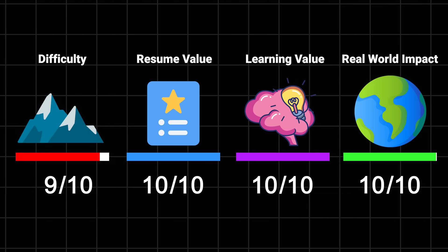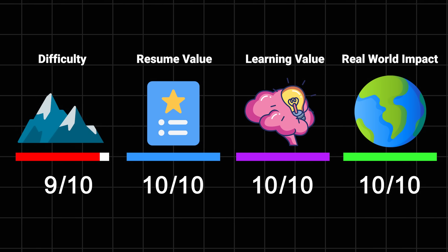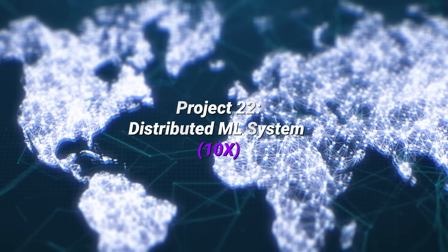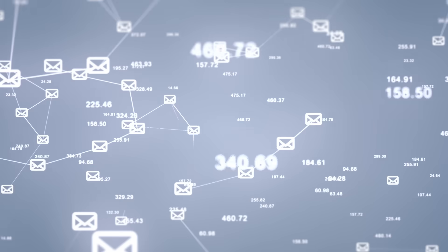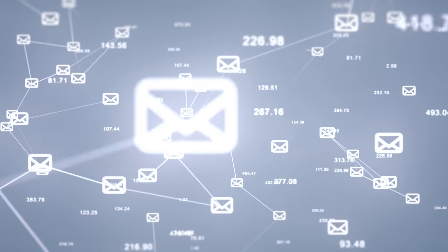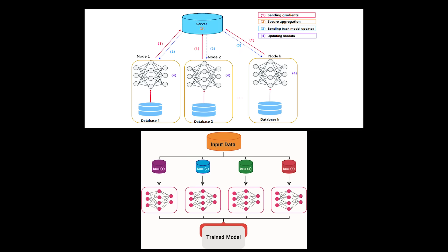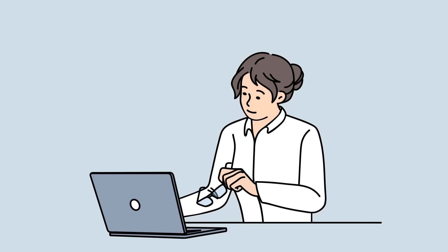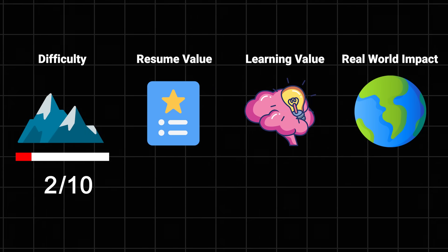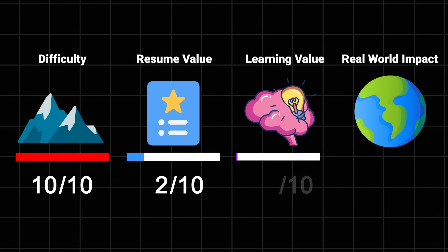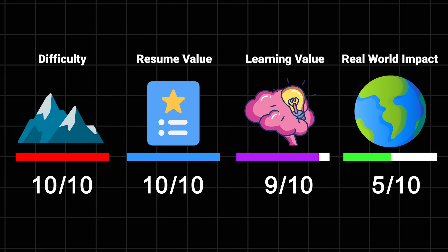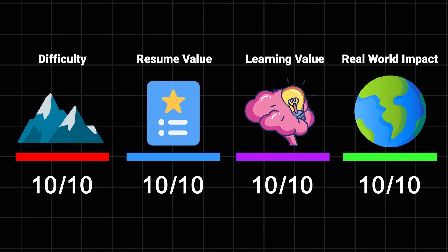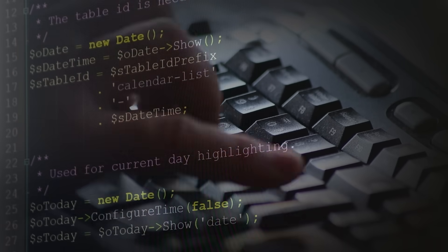Distributed ML system - the final boss of ML projects. You'll build a system that can train models across multiple machines, handle massive datasets, and process data in real time. Warning: you might need more than one laptop for this. Difficulty: 10 out of 10. Resume value: 10 out of 10. Learning value: 10 out of 10. Impact: 10 out of 10.